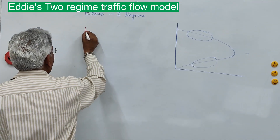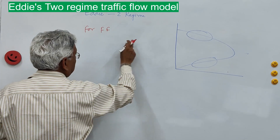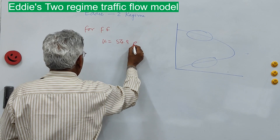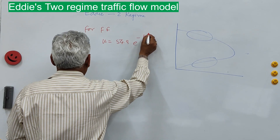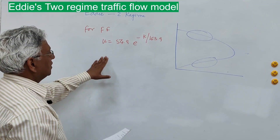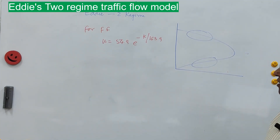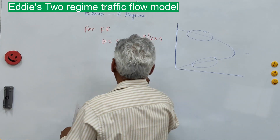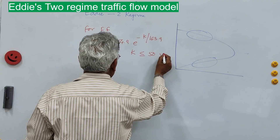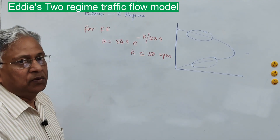For the free flow or uncongested case, the equation is: u = 54.9 · e^(−k / 163.9). This was based on traffic data collected in Chicago. Edie suggested that when density is less than or equal to 50 vehicles per mile, this Underwood-form equation is applicable.